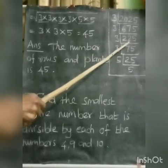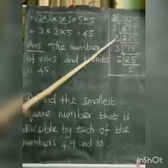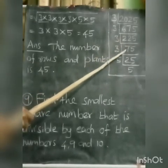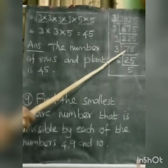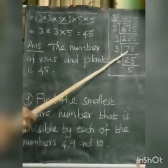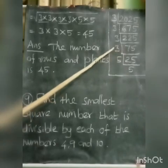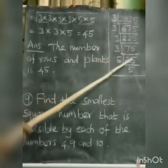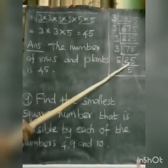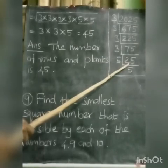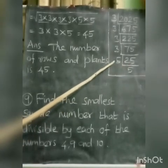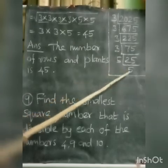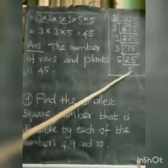Then this number 225 is also divisible by 3, giving us 75. This 75 is also divisible by 3, giving us 25. Then this 25 is divisible by 5 only — 5 times 5 is 25.